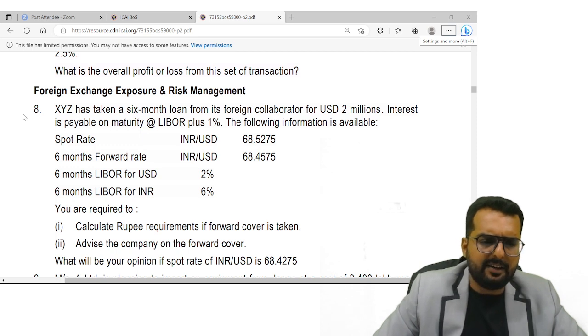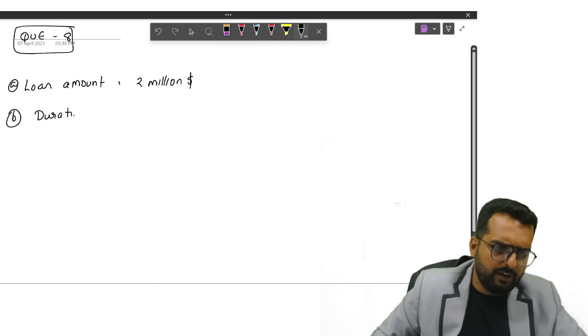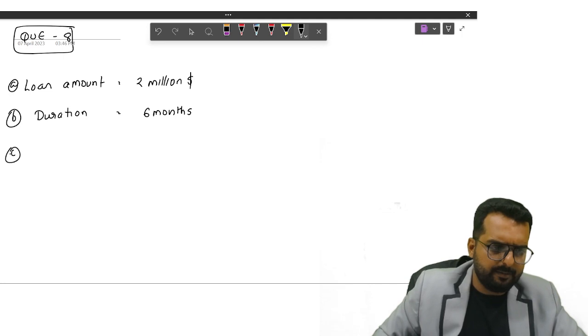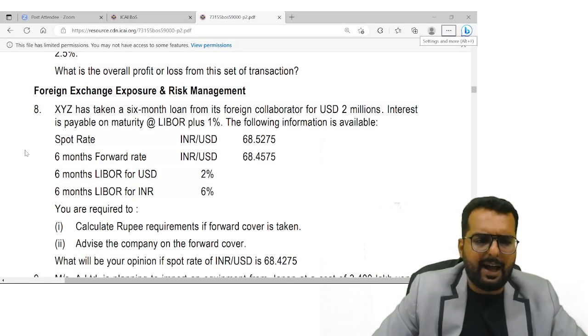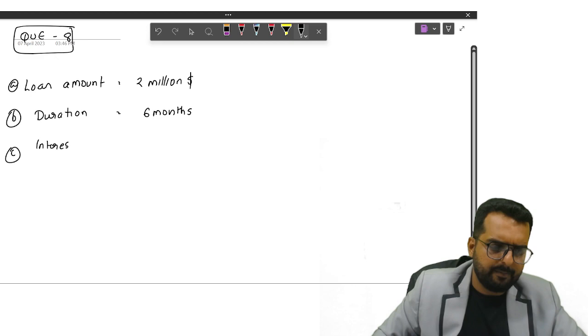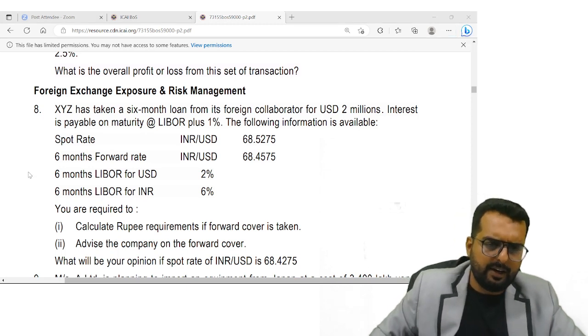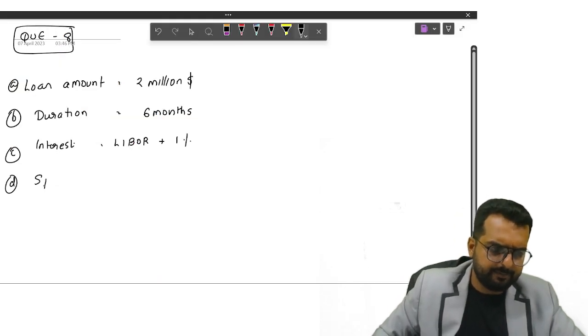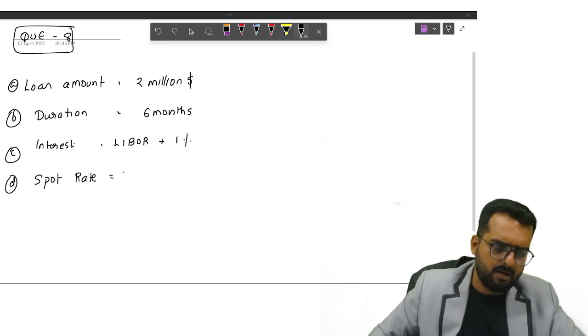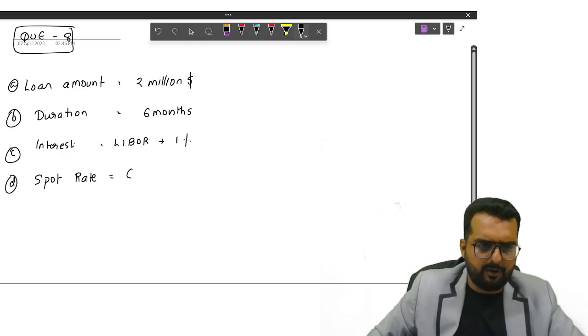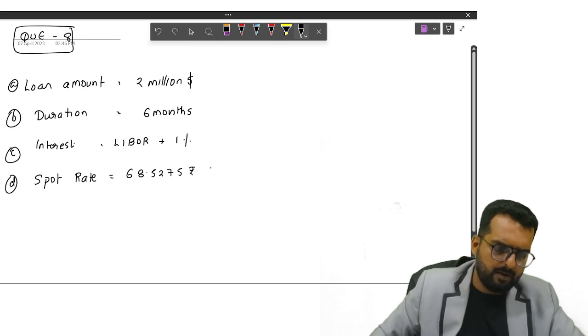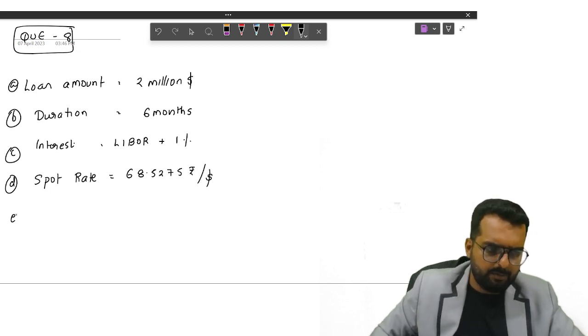From its collaborator. And the interest is payable at LIBOR plus one percentage. Duration will be six months. And they have told the interest will be LIBOR plus one percentage. Now they have given the spot rate. Let's write it down.